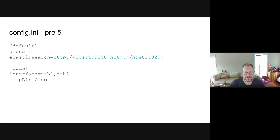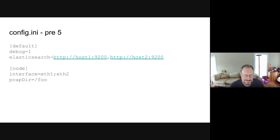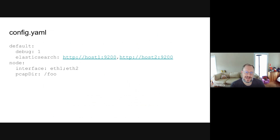Just to show off what this means: in pre-5.0, everybody had a config.ini file with sections using the standard INI format for describing configuration. Here we have a default section and a node section. Now you can do YAML and JSON. Here's a sample of YAML — we're just using normal YAML format with spaces and colons, which is much easier to read.